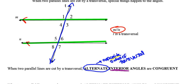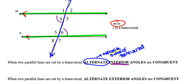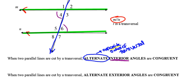So in looking at this picture here, angles four and six are inside the green lines but on opposite sides of the blue transversal, making them alternate interior angles. And because those lines are parallel, they're always going to be congruent to each other.